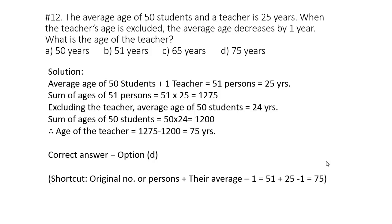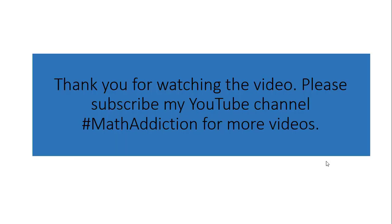Now whenever we are encountered with such problem when the age of one person is excluded and the average age is also decreased by one year, then the shortcut way of solving this problem is we will add original number of persons and their average and subtract one. So in this case, original number of persons was 51, their average was 25. 51 plus 25 is 76, then subtract one, we get 75 years. So this problem can be solved within few seconds if we know the approach.